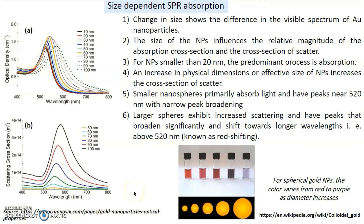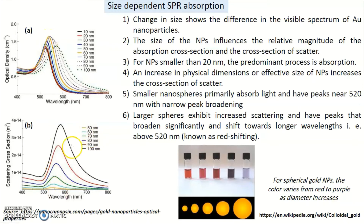In figure B, the y-axis is scattering cross-section and x-axis is wavelength. If the size is 50 nanometers, the scattering cross-section is smaller, which means absorption is higher. At 60 nanometers, the scattering cross-section slightly increases, so absorption slightly decreases. As you increase the size of the metal nanoparticle, the scattering cross-section increases and absorption goes down.